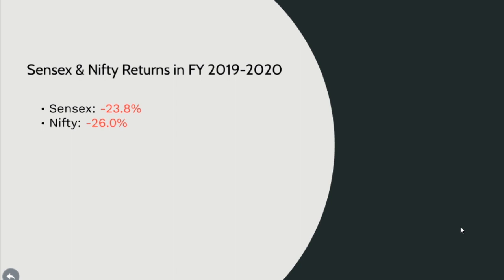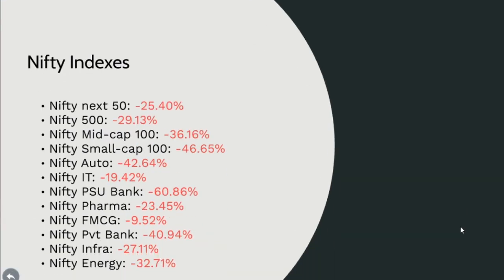If the market still goes down, we must have cash so that we can take advantage and buy more. Looking at the other Nifty indices: Nifty Next 50 gave minus 25.4 percent, Nifty 500 minus 29.13 percent, Nifty Midcap 100 minus 36.16 percent, and Nifty Small Cap 100 minus 46.65 percent. Nifty Automobile has been adversely affected the most, as the sector has been struggling for more than two years.